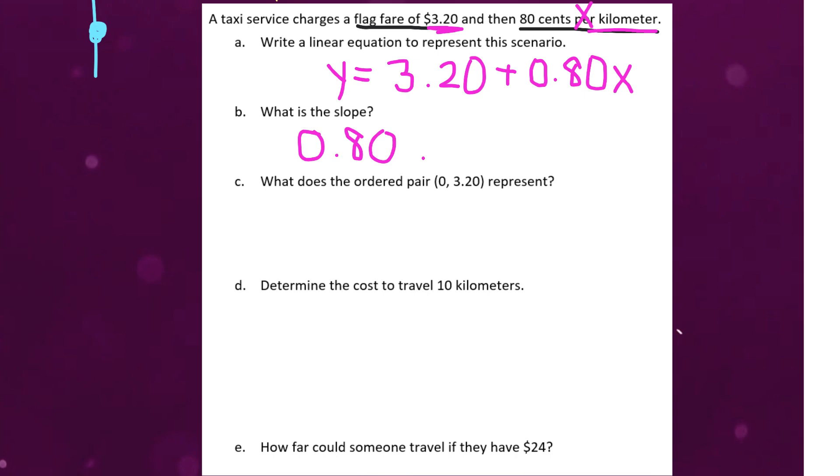Part C is asking, what does the ordered pair 0, 3.20 represent? So, if we were to imagine graphing this, it might look something like this, where it starts at $3.20 and goes up by $0.80 per kilometer. So, the ordered pair 0, 3.20, that represents our y-intercept.